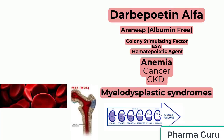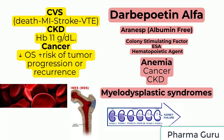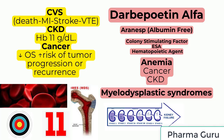US Boxed Warning — Cardiovascular Events: Erythropoiesis stimulating agents increase the risk of death, myocardial infarction, stroke, venous thromboembolism, and thrombosis of vascular access. Chronic kidney disease patients experienced greater risks of death, serious adverse cardiovascular reactions, and stroke when administered erythropoiesis stimulating agents to target a hemoglobin level of more than 11 g/dL.